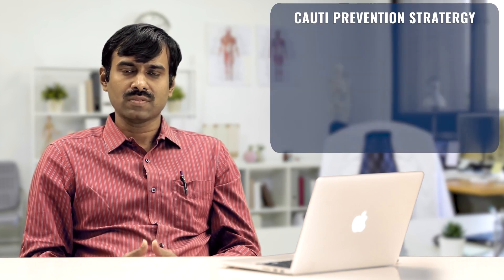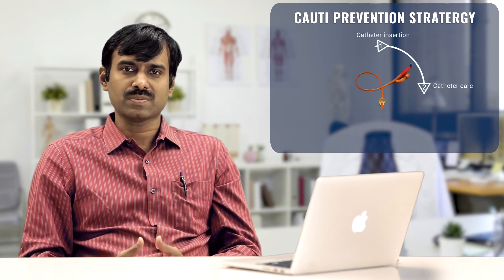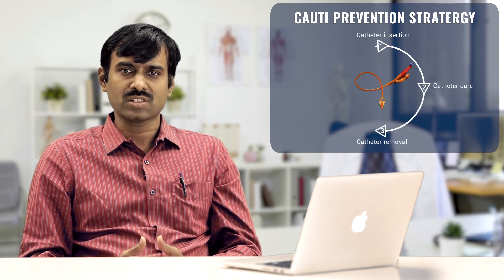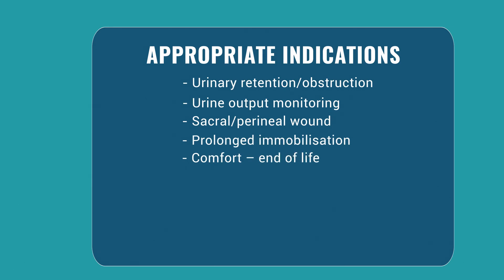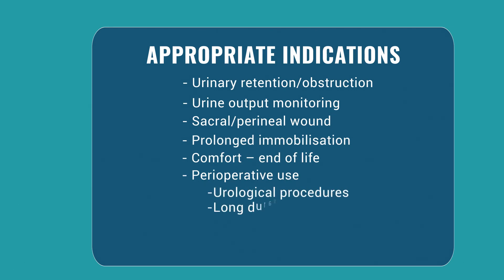Prevention is always better than cure. CAUTI prevention strategies should involve the entire catheterization process — from insertion through catheter care and until removal. The most effective strategy is avoiding catheters altogether, so catheterization should be reserved only for appropriate indications. These include urinary retention or obstruction, patients requiring urine output monitoring, patients with sacral or perineal wounds, patients undergoing end-of-life care, and perioperatively in urological procedures, prolonged surgeries, surgeries requiring urine output monitoring, or where large volume fluid shifts are anticipated.